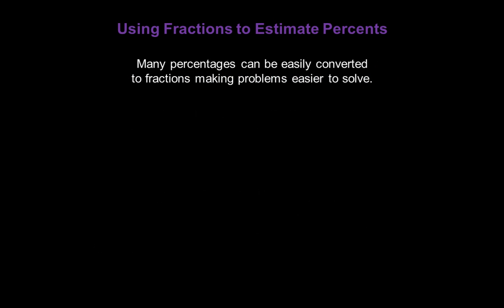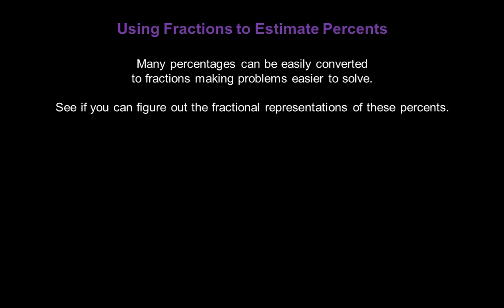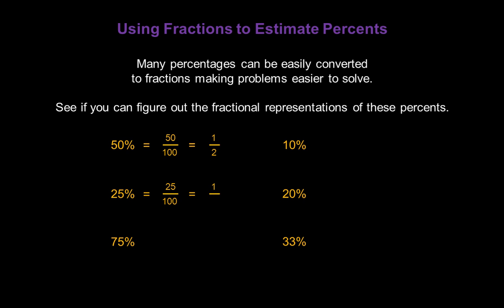Many percentages can be easily converted to fractions, making the problems easier to solve. See if you can figure out the fractional representation of some of these common percents. 50% means 50 out of 100, which reduces to one half. 25% is 25 out of 100, which reduces to one quarter. 75% is 75 out of 100, which reduces to three quarters.